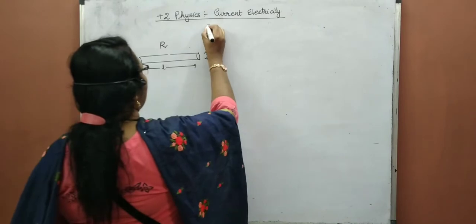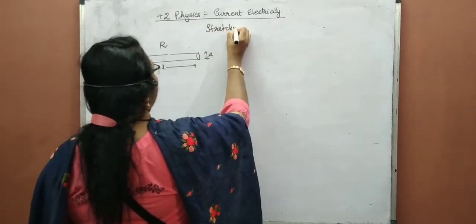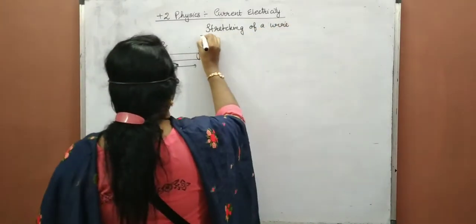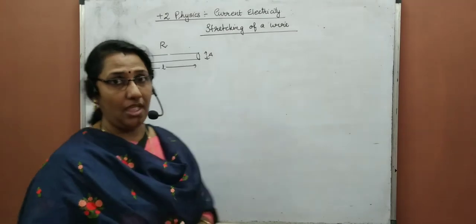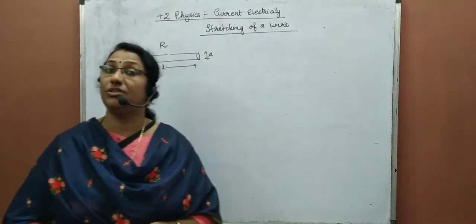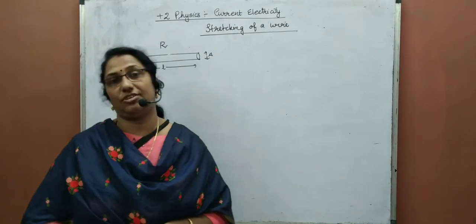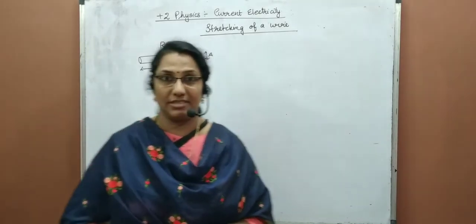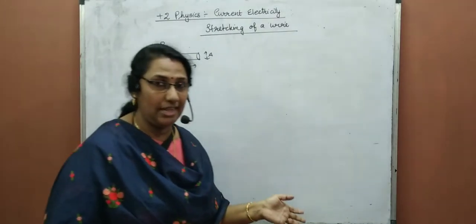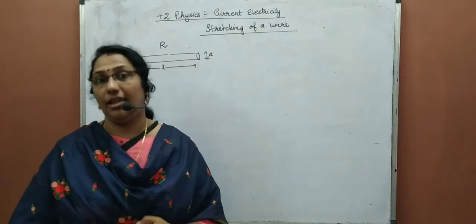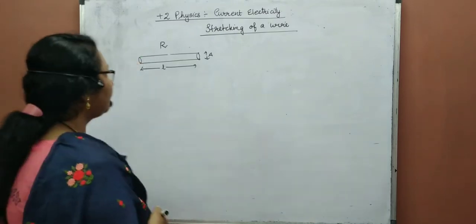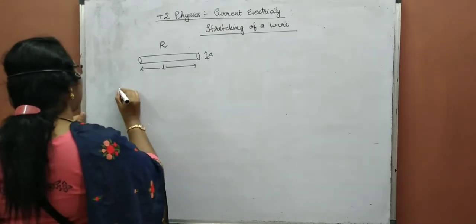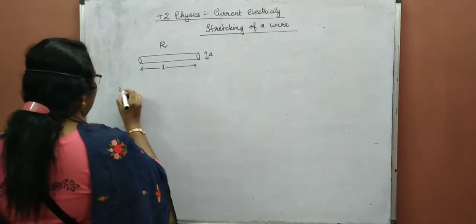The topic is stretching of a metallic wire. We are going to stretch this wire and see what happens to its resistance during stretching. There is a metallic wire of resistance R, length L, and area of cross section A. We stretch this wire from both sides. During stretching, the length increases, and at the same time the area of cross section decreases.